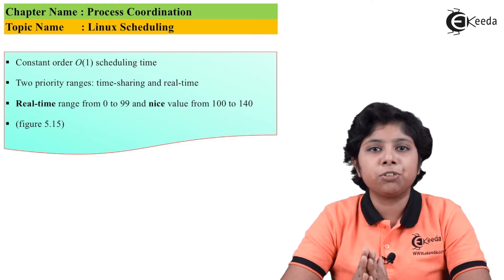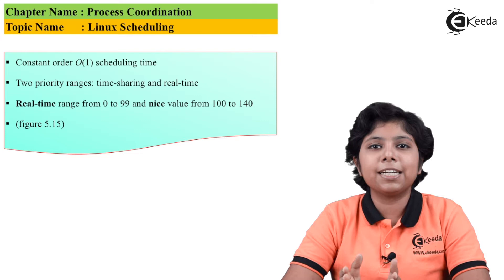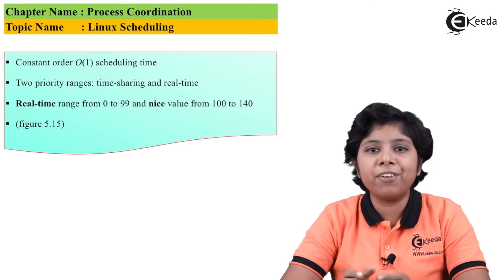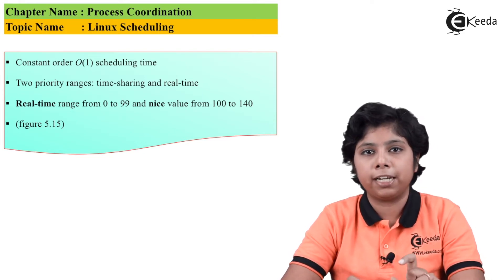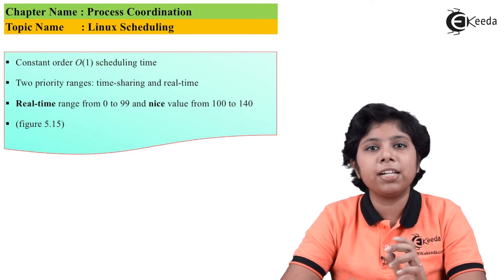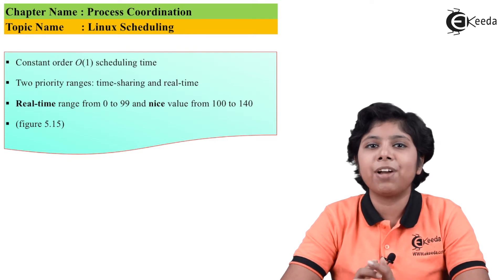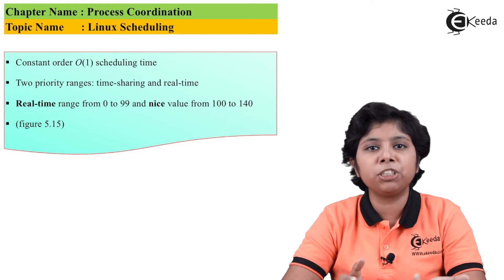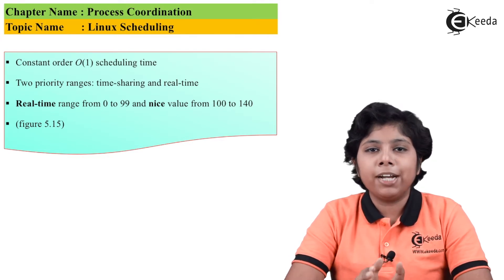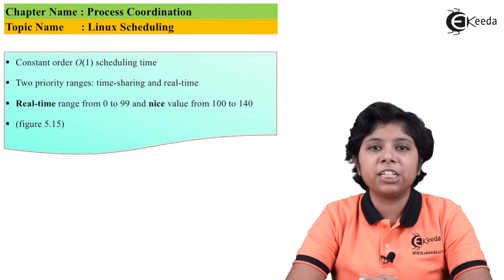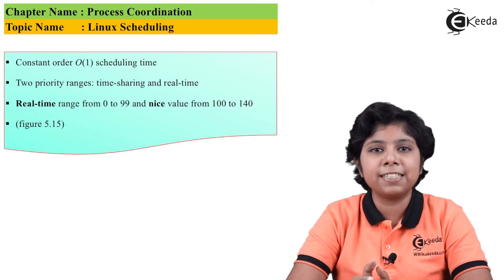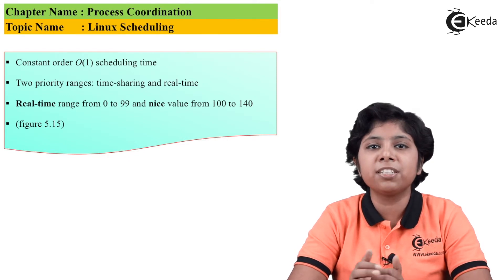Rather than using strict rules for time slices, the Linux kernel uses a targeted latency — a duration of time within which every runnable process should run at least once. This targeted latency determines the CPU processing time that each process receives, proportional to its nice value. The CPU proportion time is derived from the targeted latency. When the number of processes in the system exceeds a certain threshold, the targeted latency value also increases.